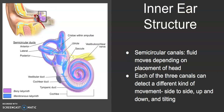One of the most important parts of this system is the semi-circular ducts. There are three of them — one goes this way, one goes this way, and one goes this way. Fluid runs through them and it moves depending upon the placement of the head.